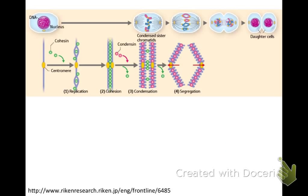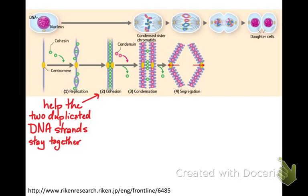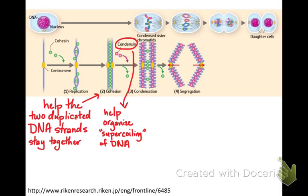Here are those cohesins and condensins. When the DNA is replicated, cohesins come in and help keep those two matching strands of DNA together. Later on, as the cell condenses, fewer cohesins are needed because the DNA is more compact and less stringy. But it requires special proteins — the condensins — to organize the super-tight coiling of the DNA.